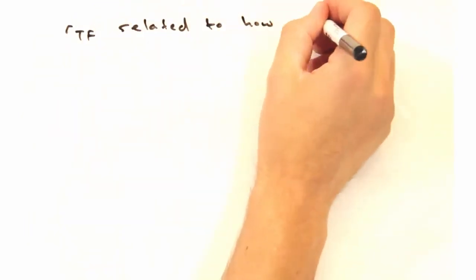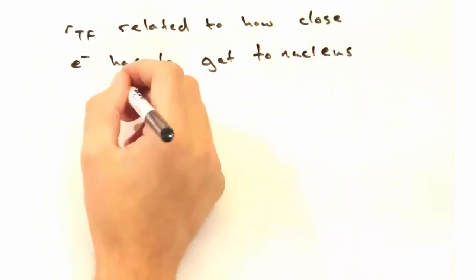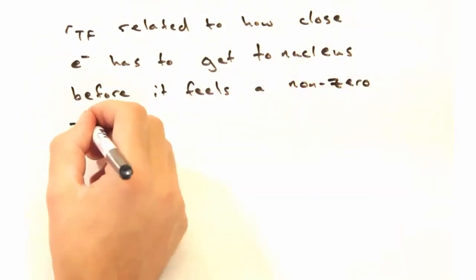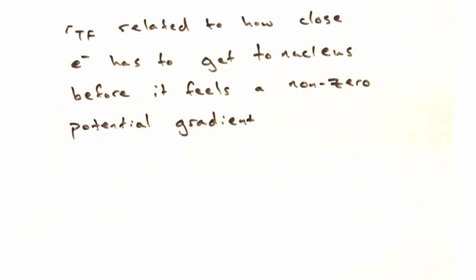Rtf is related to how close an electron has to get to the nucleus before it feels a non-zero potential gradient. Oh, so it's the width of our potential well? Not quantitatively, but that's a pretty decent way to remember it anyway.